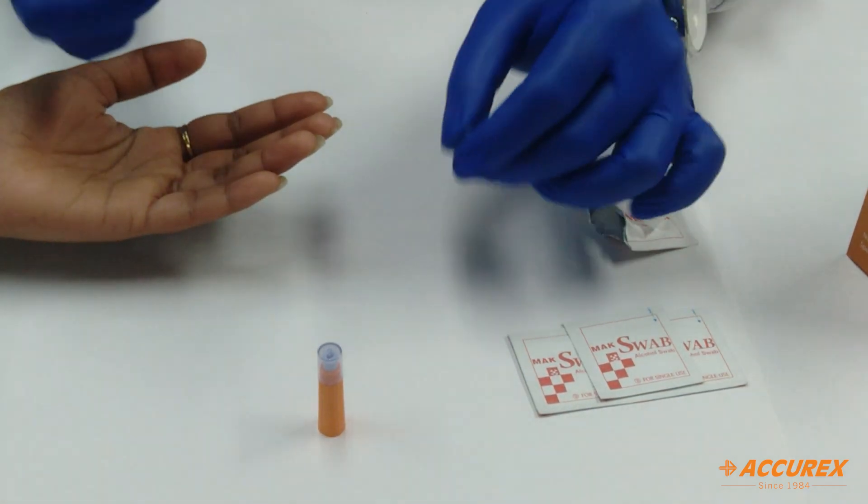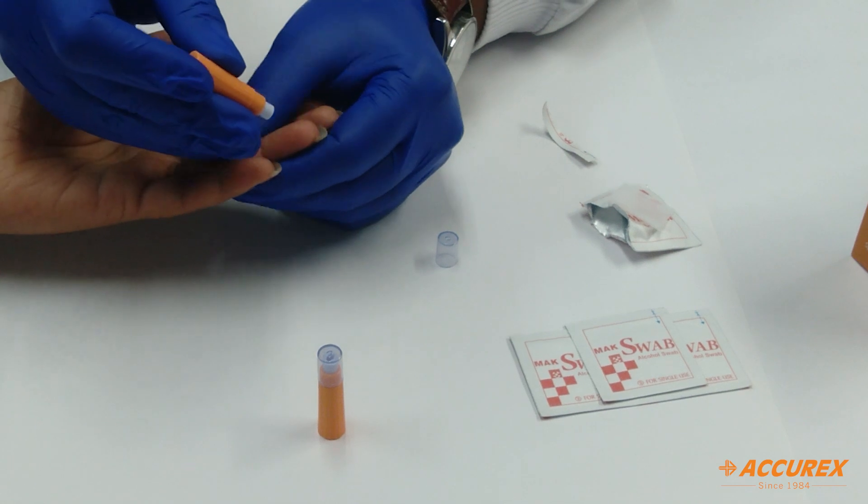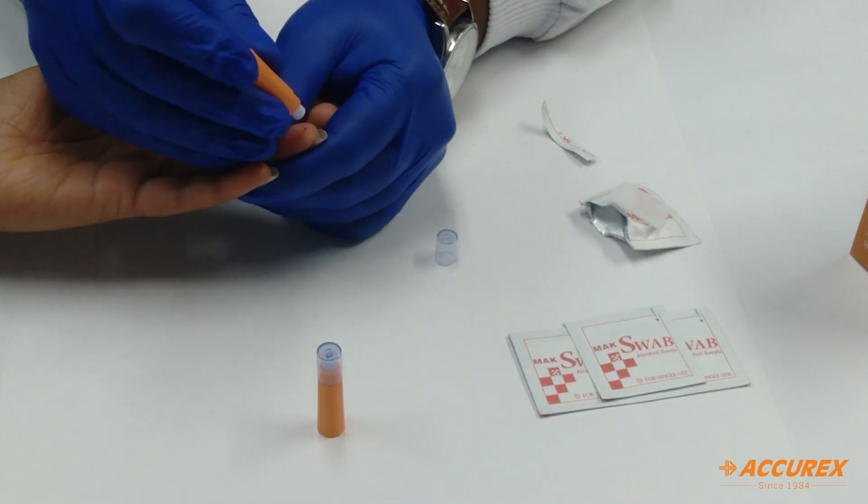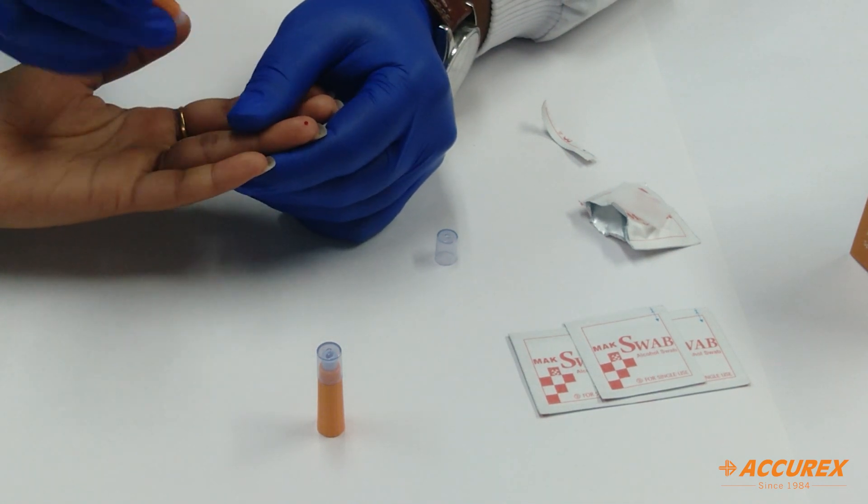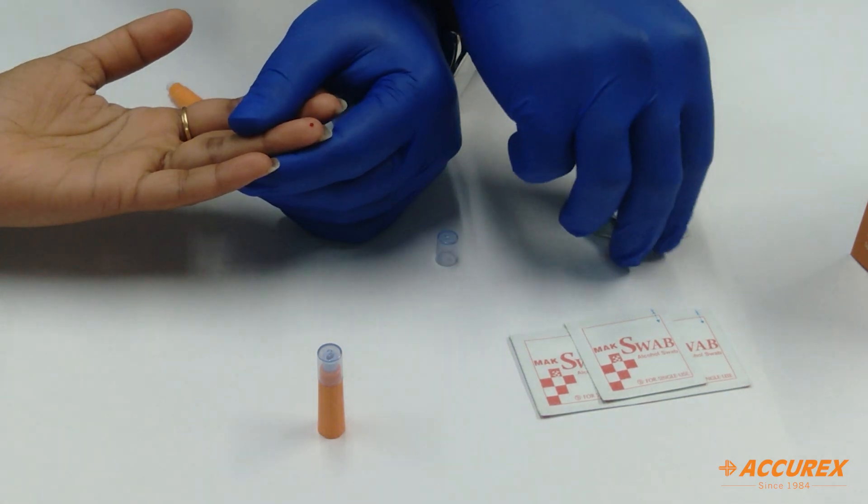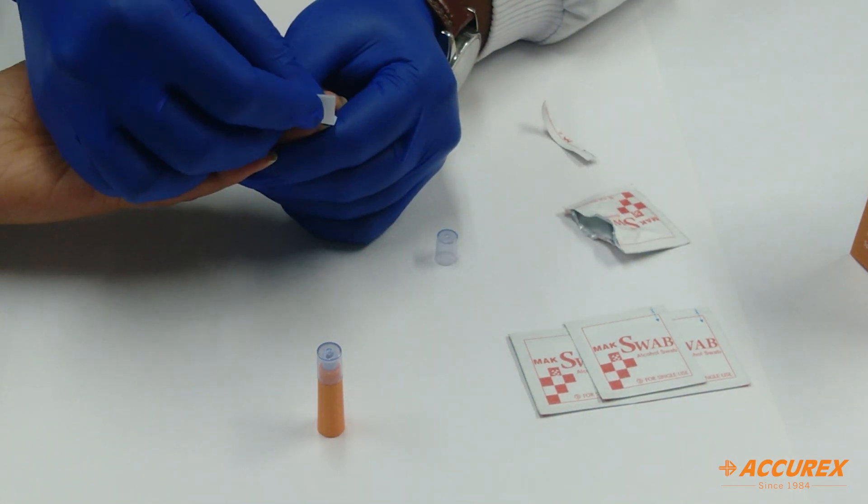Then we will take this lancet. Just tap on this. You just need to prick once and the blood will come. After doing the testing, just wipe out with the alcohol swab.